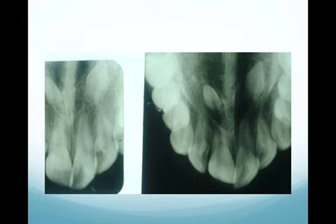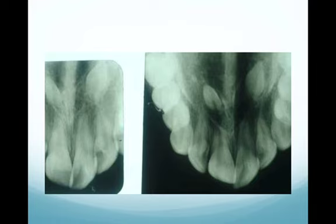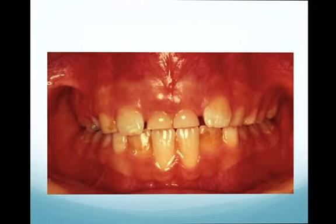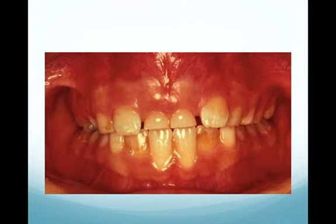As seen on this anterior occlusal radiograph, these conical supernumeraries have a crown, an underdeveloped root, and are inverted and impacted without causing any displacement or impaction of the incisors. These were diagnosed by chance on a radiograph.